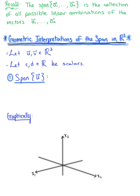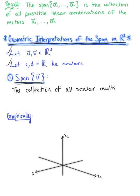With that in mind, let's let vector u and vector v be two non-zero vectors in R3, and let c and d be any scalars. Case number one is the span of a single vector u. The span of vector u is simply the collection of all scalar multiples of vector u.